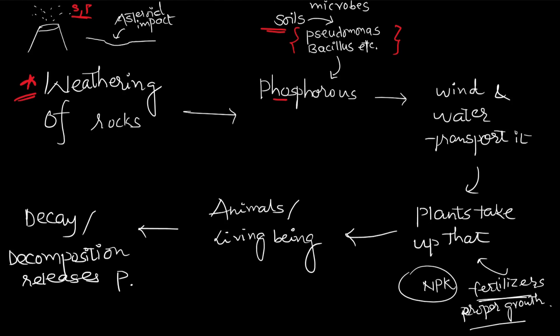The produced phosphorus gets transported with the help of wind and water, and reaches the plants, which take up that phosphorus. Wherever plantation takes place, NPK fertilizers are given — P stands for phosphorus — so fertilizers containing phosphorus are given to plants for proper growth.